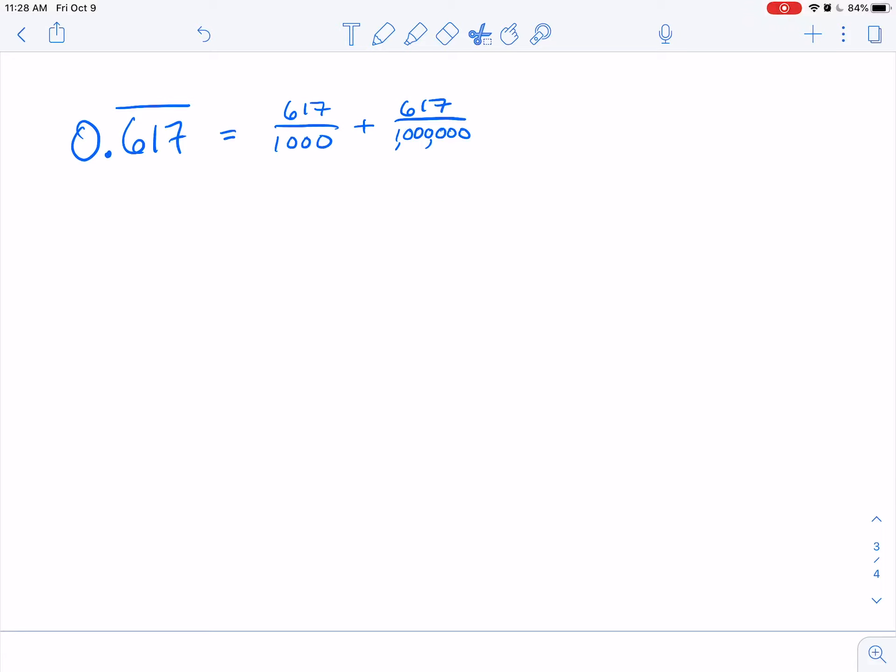This keeps going forever. We find that our first term is 617 over 1000, and our common ratio is 1 over 1000. If we're going to use our formula for the sum of an infinite geometric series, first of all, is this less than one? Yes, it sure is. So the sum equals a sub 1 over 1 minus r.